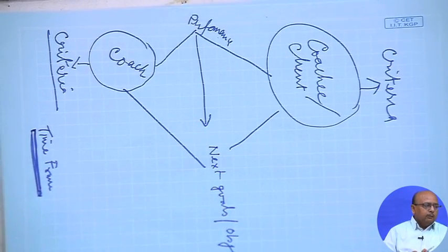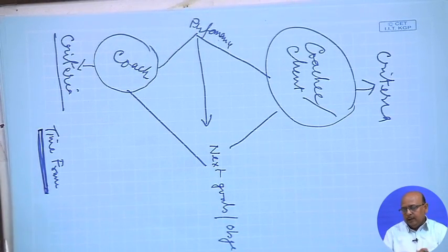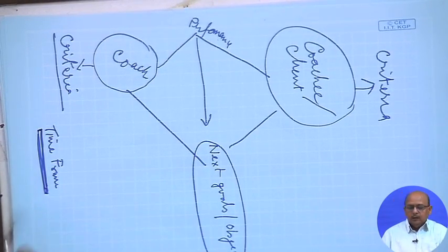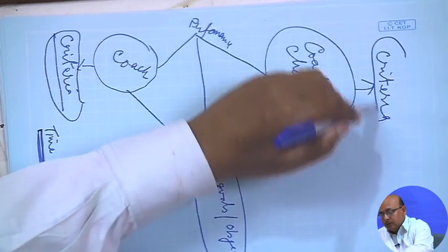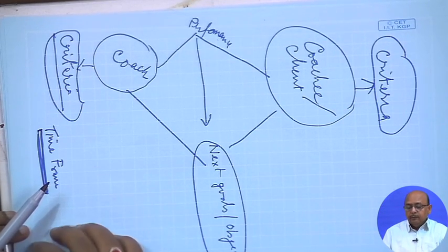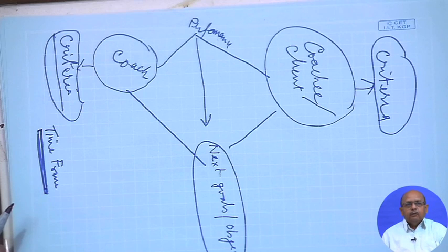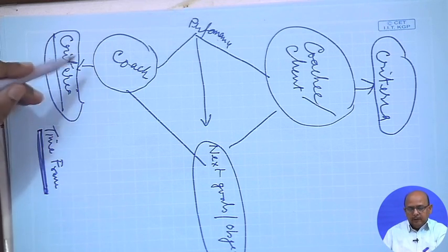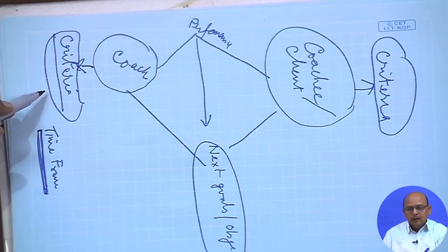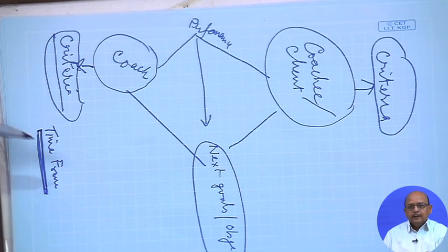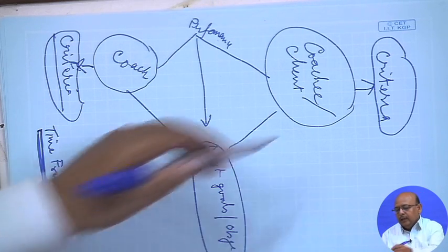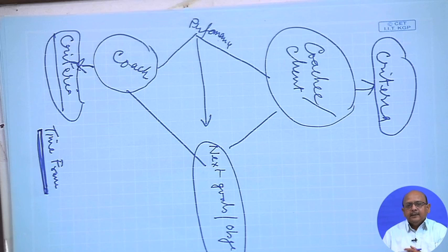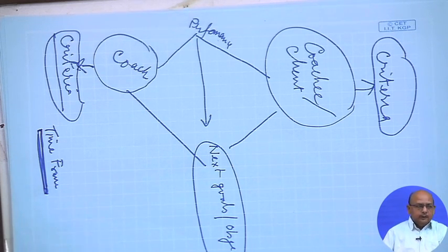In the process you will identify the issues and set your next goals and objectives, related to both the coach and the coachee. Some evaluation criteria may be common — for example, performance criteria — but some will differ. For the coach, you look at skills: whether the coach has been able to analyze things better, what delivery mechanism was used, and whether there is a change in behavior and performance. The criteria for coach and coachee will be different.